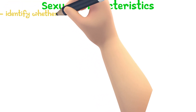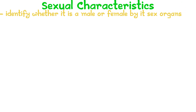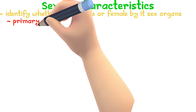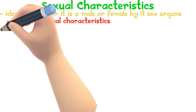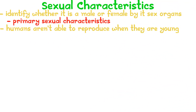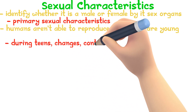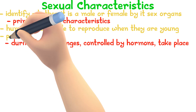Once a baby is born, you can identify whether it is a boy or a girl by its sex organs. The sex organs are the primary sexual characteristics. However, humans aren't able to reproduce when they are young because they do not have the sexual maturity yet. During their teens, changes controlled by hormones take place which lead to sexual maturity. This is called puberty.